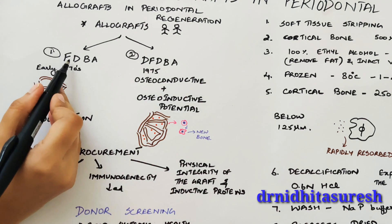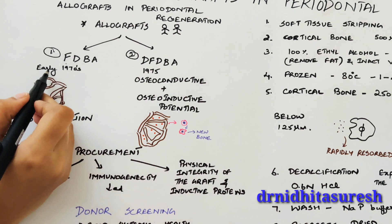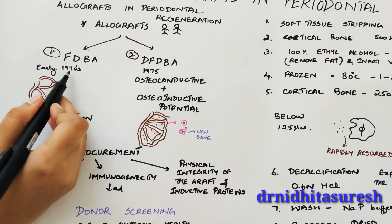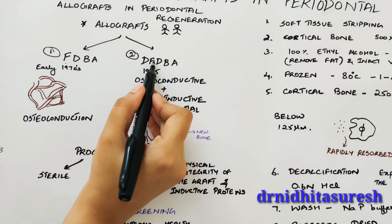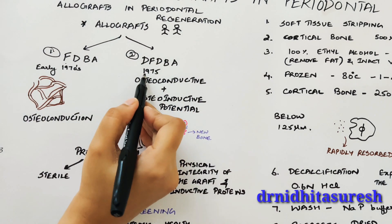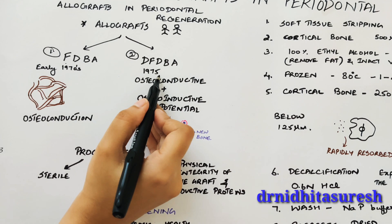FDBA began being used in periodontal defects for regeneration in the early 1970s, and DFDBA came into existence in 1975.